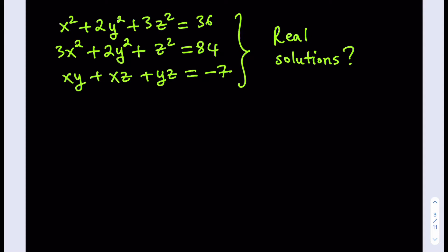We have x squared plus 2y squared plus 3z squared is equal to 36. 3x squared plus 2y squared plus z squared is equal to 84. And xy plus xz plus yz is equal to negative 7. We're looking for real solutions.